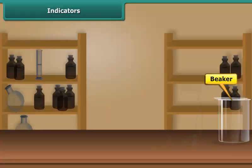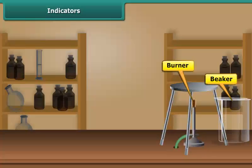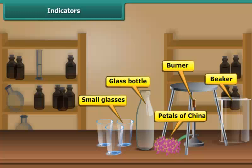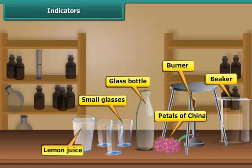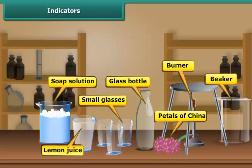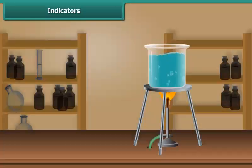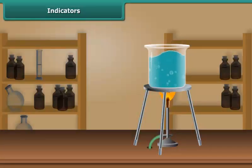You will need a beaker, gas stove, petals of china rose, a clean glass bottle, three small glasses, lemon juice, soap solution, and distilled water. Pour some distilled water in a beaker and heat it on the gas stove.